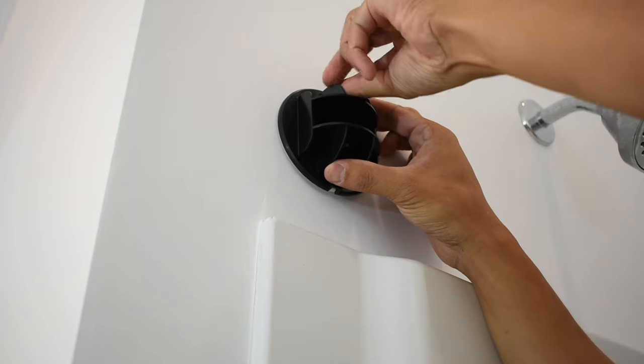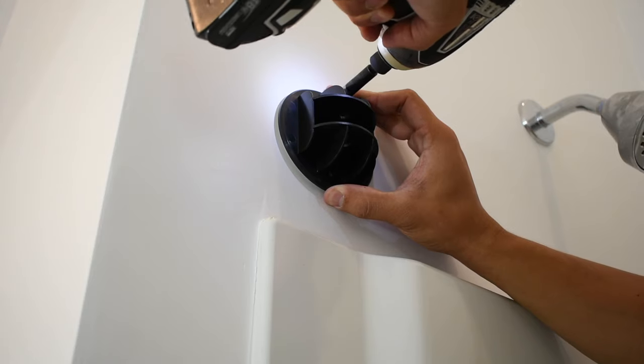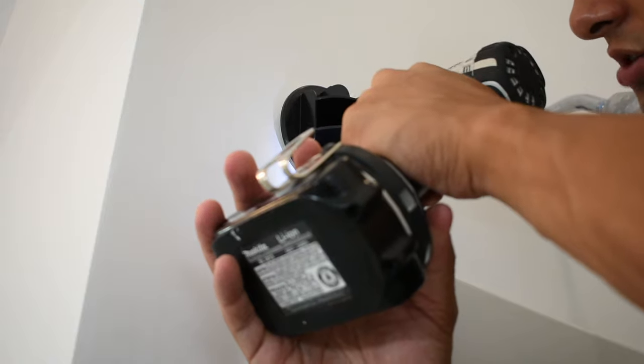Now take your shower rod mount, line up the holes, grab the screws, and fasten the bracket down. Just go until it's snug because you don't want to over-tighten the anchors and loosen those up.